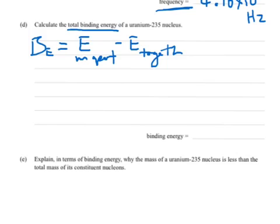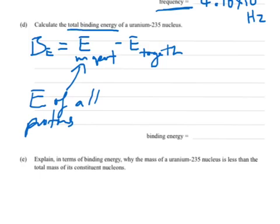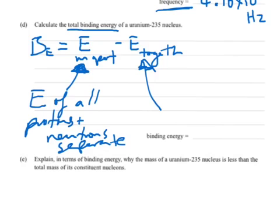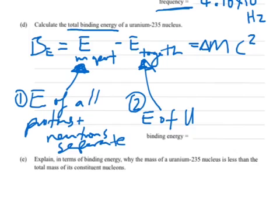So, what that means is, this is the energy of all the protons and neutrons, and that's as separate, so as individual. Just remember when they're apart, they have more energy, and when they come together, they lose energy, and they decrease mass, and this is going to be the energy of the uranium, when they're all kind of pushing together. So, what that's going to be is, how we do that is, we take the mass difference, so the change in mass, between these two situations, and we multiply it by the speed of light squared.